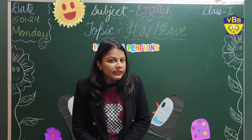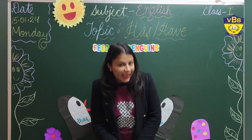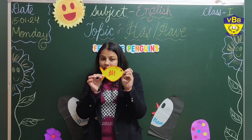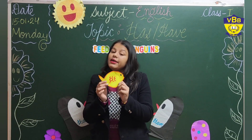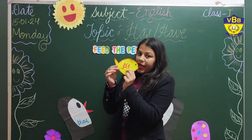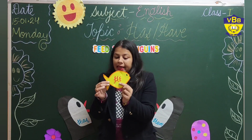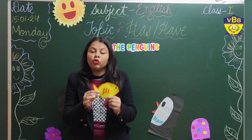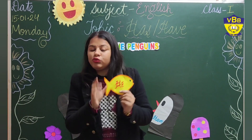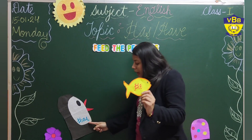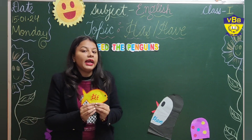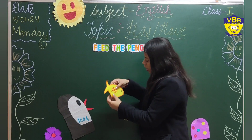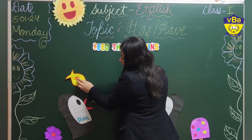You have to tell me which food item the 'has' penguin will eat and which the 'have' penguin will eat. Penguins eat fishes. This fish has the word 'he' written on it. He means only one single person. So which penguin will eat it — the 'has' penguin or the 'have' penguin? Yes, the 'has' penguin will eat the word 'he,' so we will paste it there.